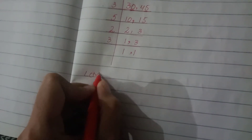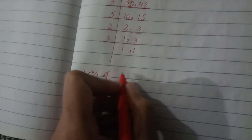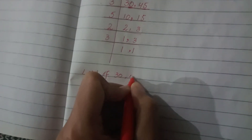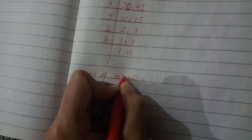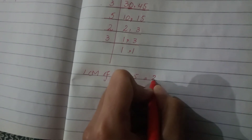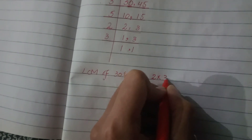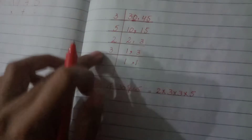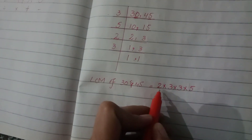So let's start it. LCM of 30 and 45 is: 2 multiplied by 3, multiplied by 3, multiplied by 5. You can write the order as you like — just write the smallest number first.